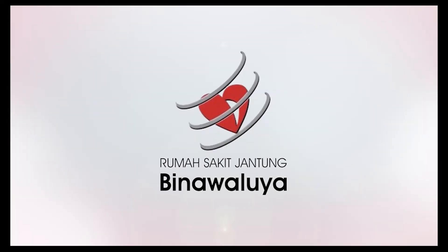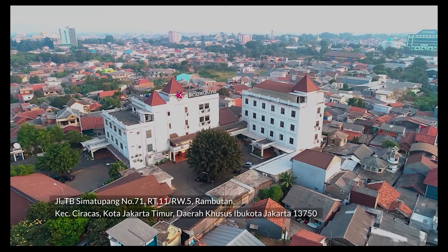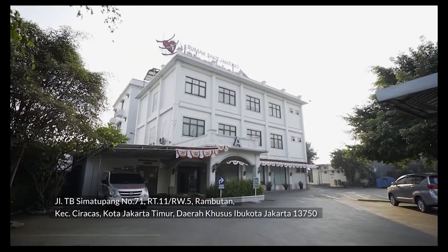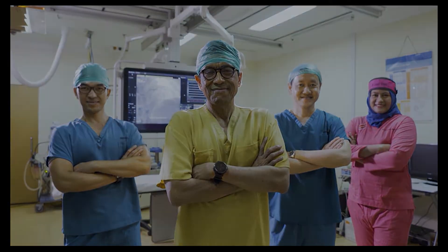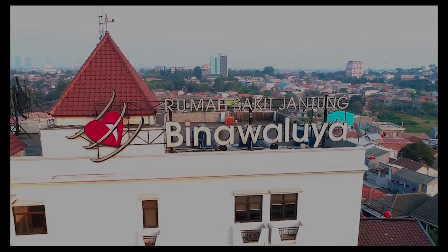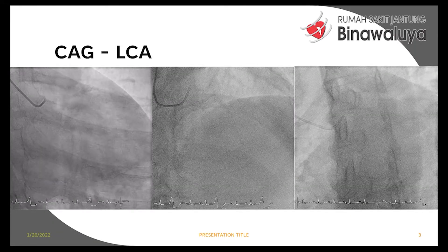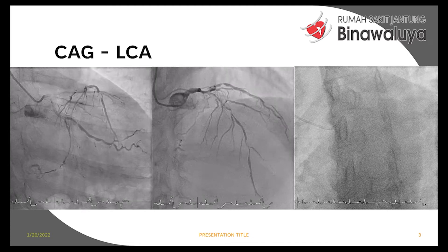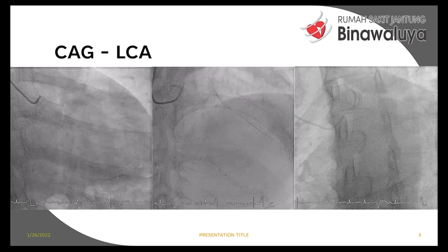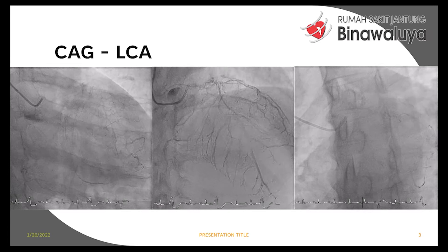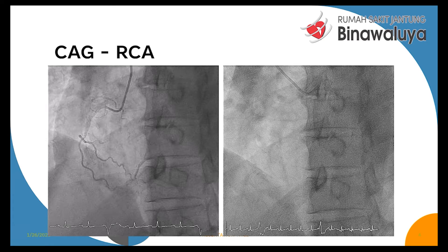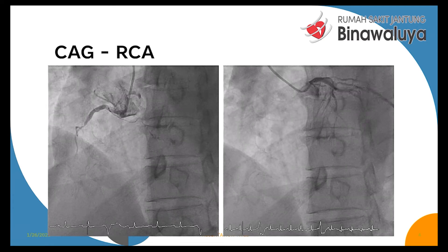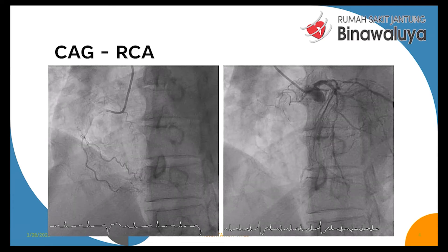Memang ini agak susah. Biasanya pasien seperti begini, umumnya saya tidak mau ad hoc — pasti bukan ad hoc. Kalau kita melakukannya, saya harus menggunakan hemodynamic support. Karena ini adalah diffuse LAD, LCX, atau dengan kata lain ini adalah left main equivalent, dengan CTO di RCA. Kenapa saya ambil kiri? Karena kalau kita bisa berhasil membereskan sebelah kiri, pasien akan jauh lebih baik.